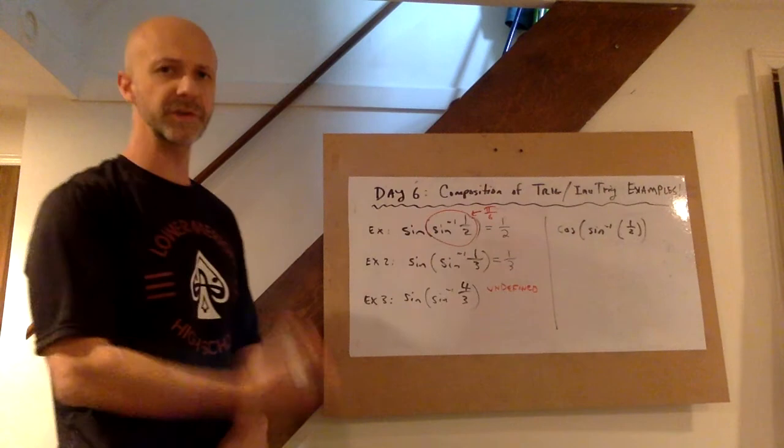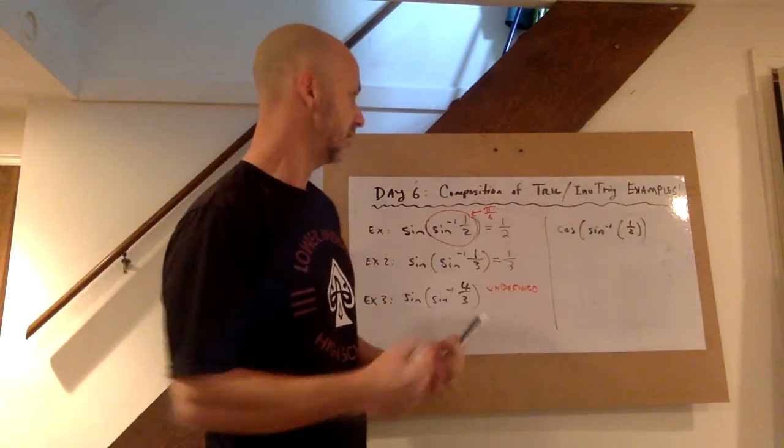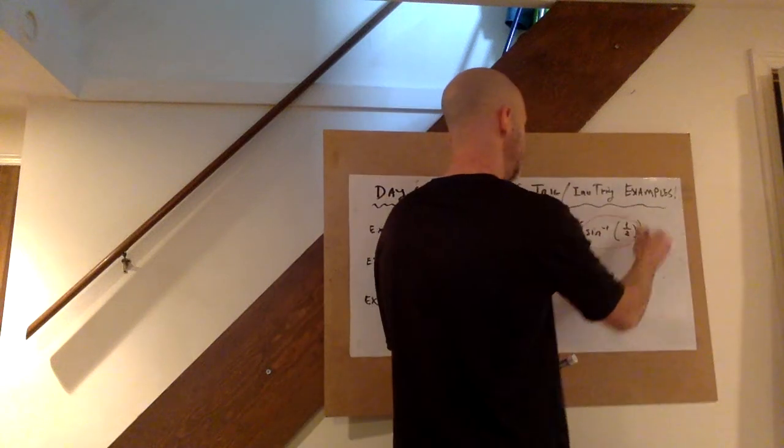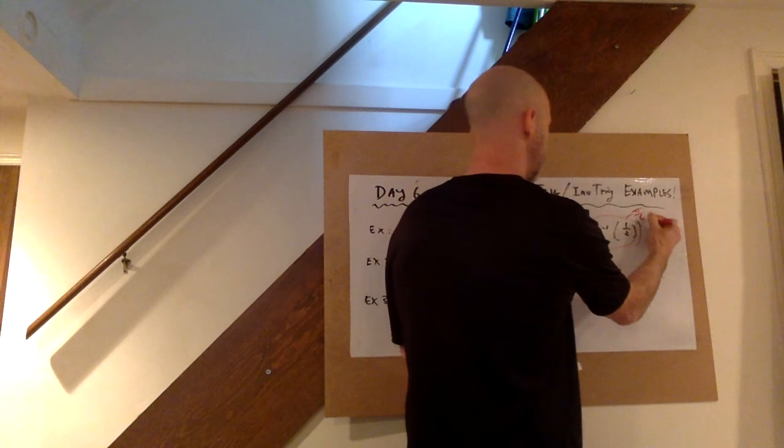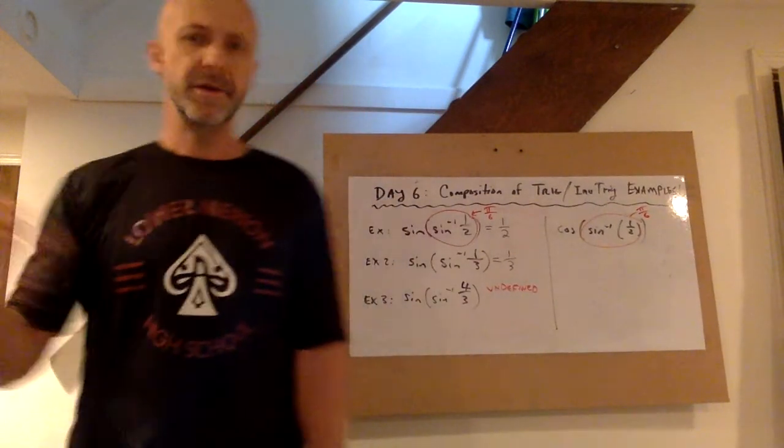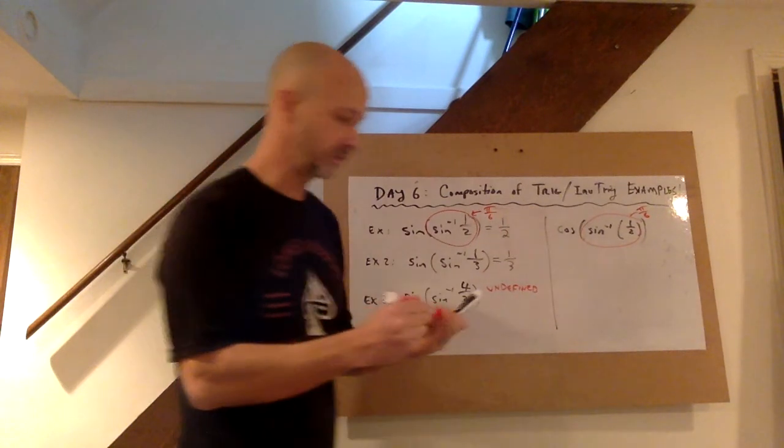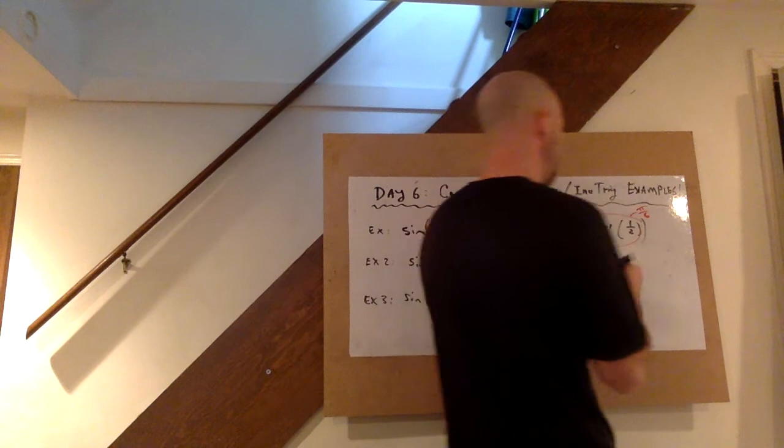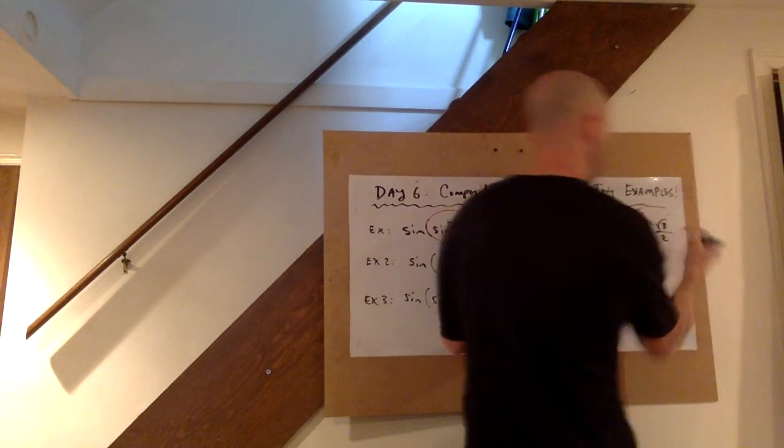In this problem we could still use the same old strategy of saying, oh I know sine inverse of 1/2, that's a nice unit circle value. It is pi over 6 or 30 degrees. And then continuing with that train of thought, I know cosine of pi over 6, that's root 3 over 2. So that problem you can just kind of do from all that work you put in with the unit circle.